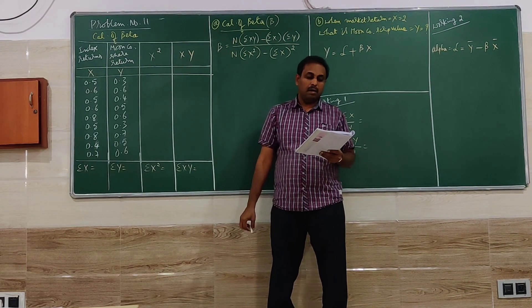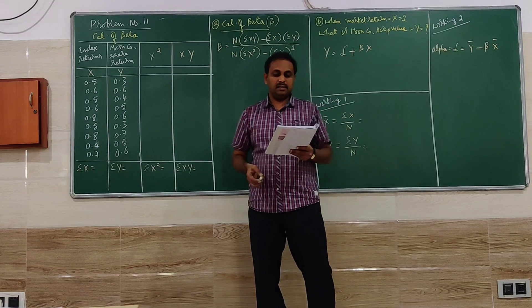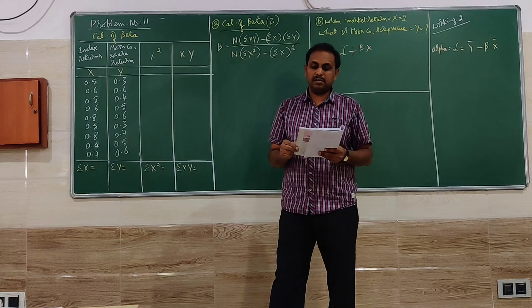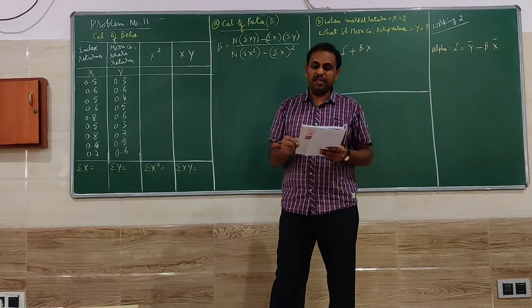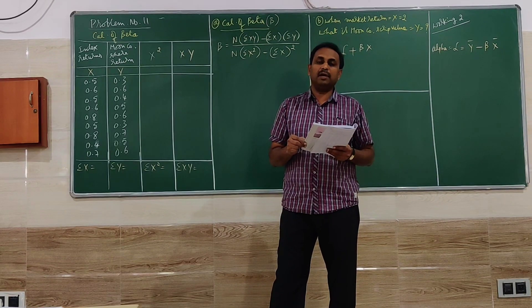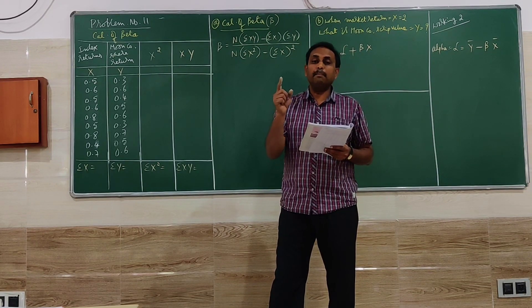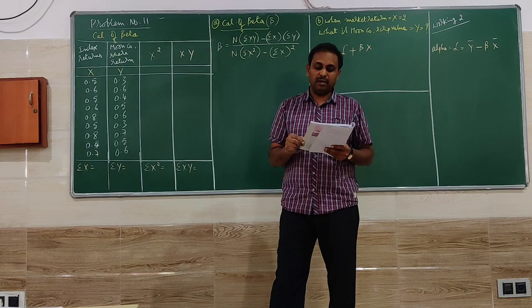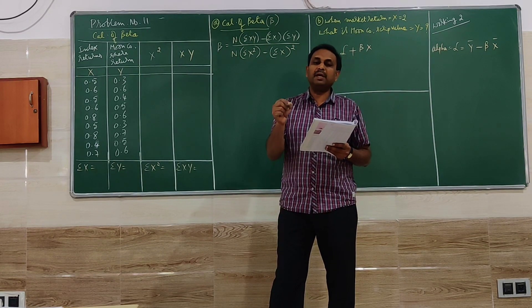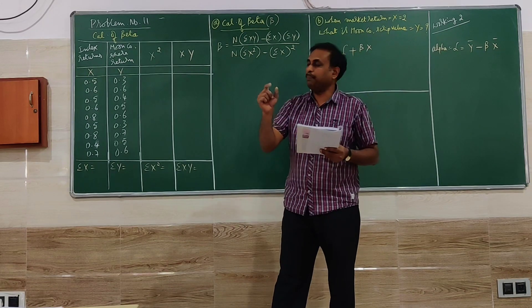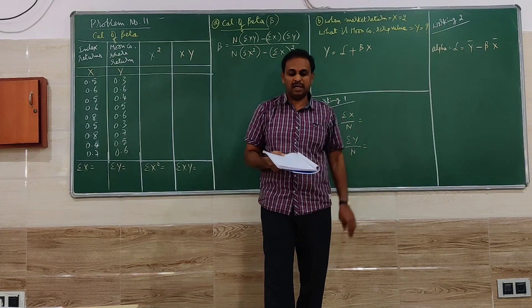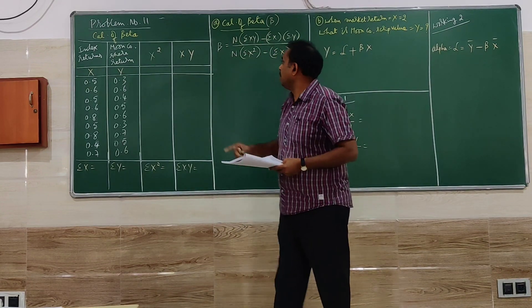Welcome to problem number 11. This goes like this: from the following data, the market returns and moon company shares return is given for a particular period. Calculate first, beta value, and second, if market return is 2, what would be the script return? Script return means moon company share return. So there are two questions to be calculated.